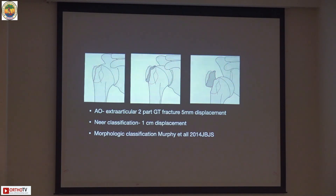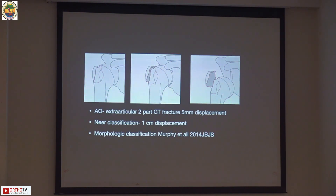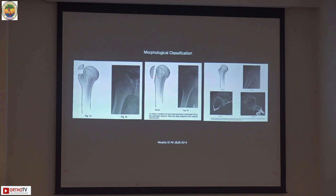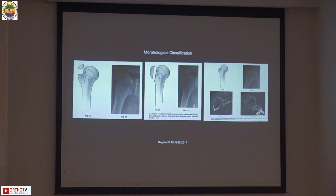The famous Neer's classification uses one centimeter displacement as the threshold for surgical indication. There is also a morphological classification which is more up-to-date, propagated by Murphy et al., who divided GT fractures into three types.